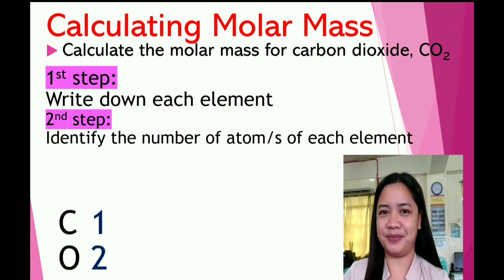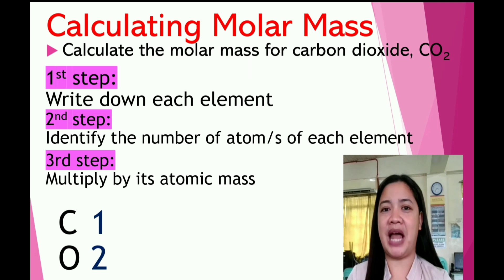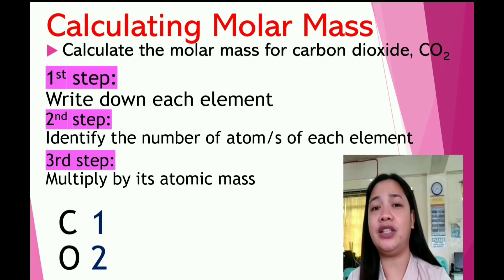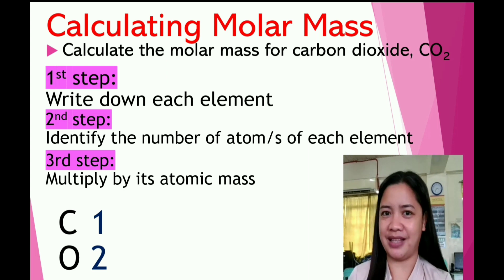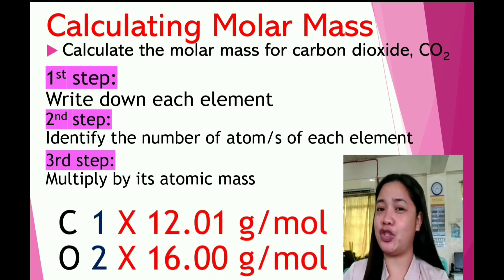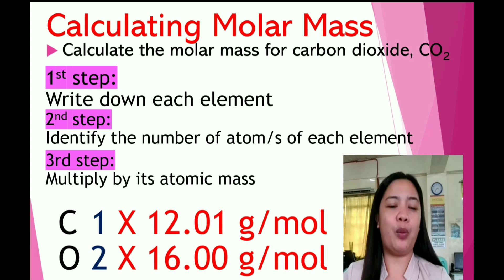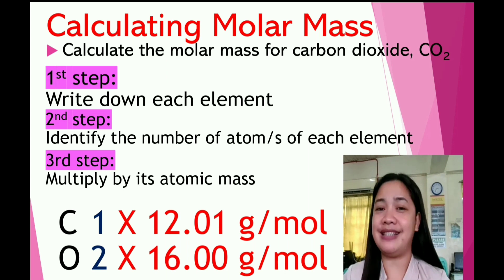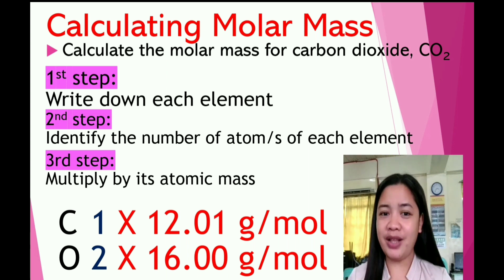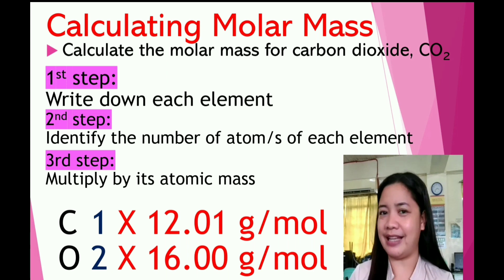Step three: multiply the number of atoms of the element by its atomic mass. Look at your periodic table of elements. The atomic mass of carbon is 12.01 grams per mole, while for oxygen it is 16.00 grams per mole. Since carbon has one atom and oxygen has two, you have to multiply each by its atomic mass.